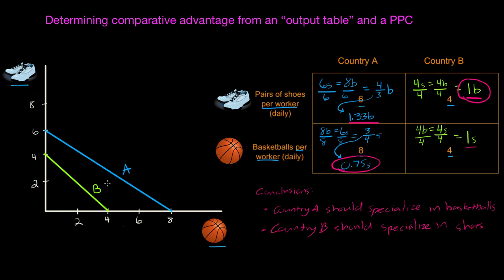Let's go back to our PPC to indicate the points at which both countries A and B will produce based on the principle of comparative advantage. Country A is going to produce nothing but basketballs due to its lower opportunity cost, putting country A down on its production possibilities curve. Country B will produce nothing but shoes due to its lower opportunity cost, putting country B at that point on its production possibilities curve.